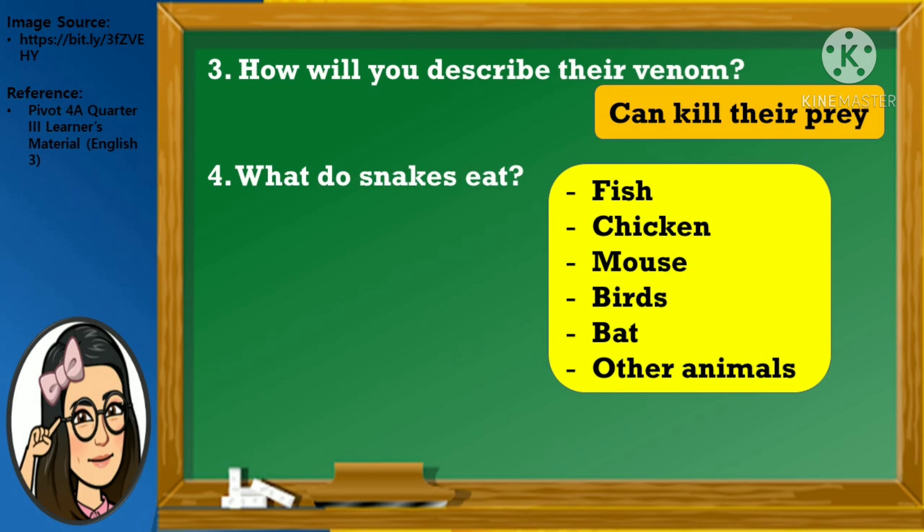The selection that I have read is an example of an informational text. It presents factual details or information about a specific topic. In this case, it discusses facts about snakes.